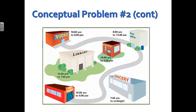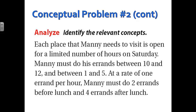So as we look at the drawing, we can see that here are six locations, and they're open during different parts of the day. So we're going to use this information as we now try and get him through his entire set of tasks. Each place that he needs to visit is open for a limited number of hours on Saturday. Remember, he has to do his errands between 10 and 12 and 1 and 5 because he's taken that one-hour lunch break, and he can only do one errand per hour.